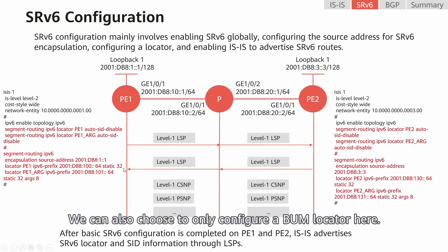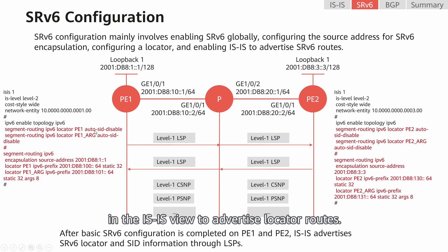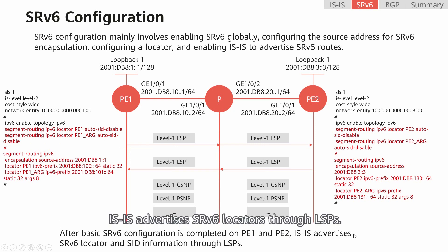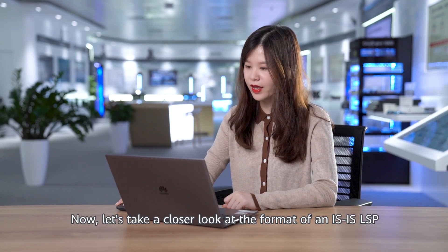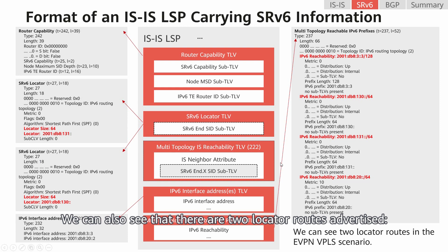To resolve this problem, we can configure a unicast locator to make full use of the address space. We can also choose to only configure a BUM locator. Because there are two locators configured, we need to run two commands in the IS-IS view to advertise locator routes. After SRV6 is successfully configured on P1 and P2, IS-IS advertises SRV6 locators through LSPs. Let's take a closer look at the format of an IS-IS LSP carrying SRV6 information. The LSP carries two pieces of locator information: one unicast route and one BUM route.